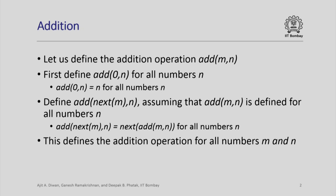This defines the addition operation for all numbers m and n, because we have defined it for m equal to 0 and all values of n — that is, add 0, n is n. And assuming it is defined for add m, n, it is defined for add next, n. So add of next of 0, n will be next of add 0, n, which will be next of n. Add of next of next of 0, n will be next of next of n, and so on. You get exactly what you want in the addition operation.